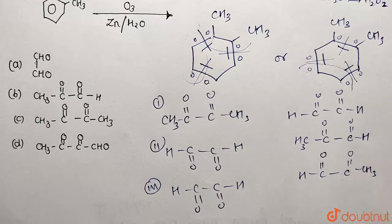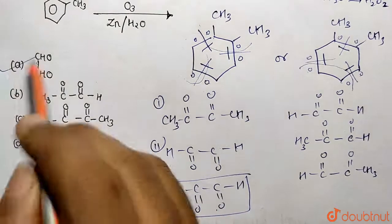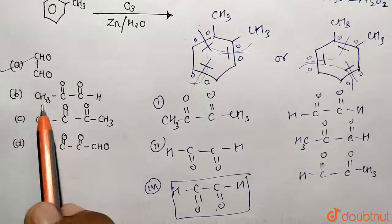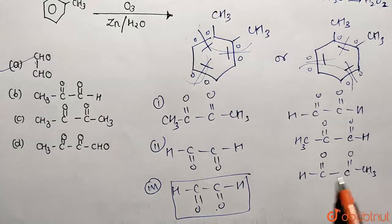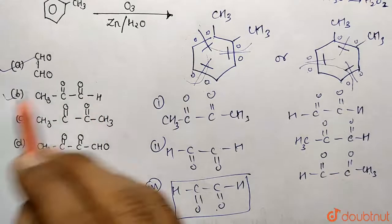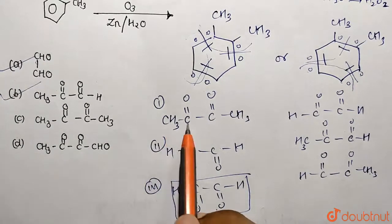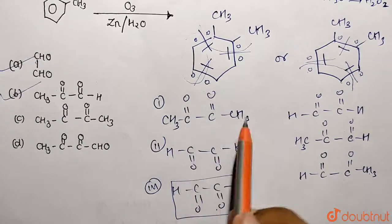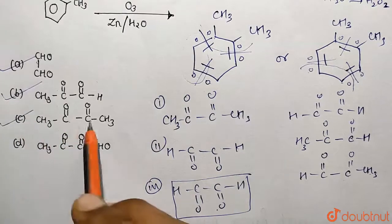Now matching with the answer options: CHO–CHO (glyoxal) is forming, so option A matches. CH₃–CO–CHO (methylglyoxal) is also forming. And CH₃–CO–CO–CH₃ (diacetyl) is also forming from the ozonolysis products.